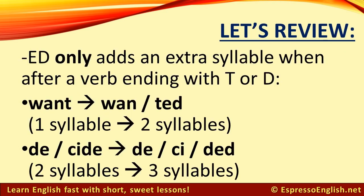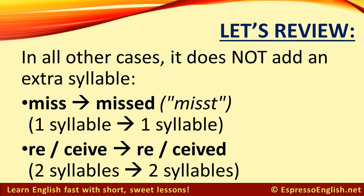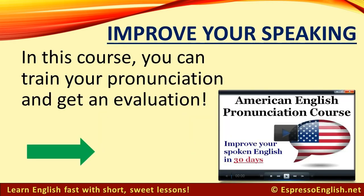Let's review. The ED ending only adds an extra syllable when after a verb ending with T or D, such as WANT and WANTED, DECIDE and DECIDED. In all other cases it does not add an extra syllable. Miss becomes missed. Receive becomes received. To improve your speaking further, join my American English pronunciation course — you can train your pronunciation and get an evaluation at the end.